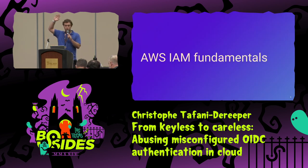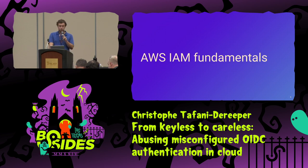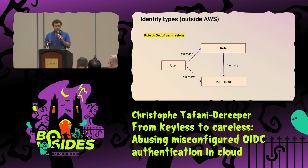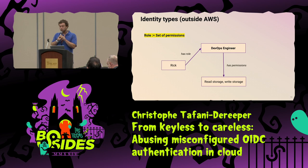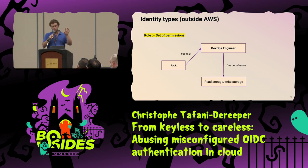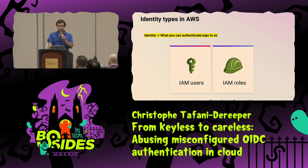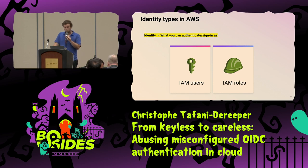So who in the room is familiar with AWS or works with it on a regular basis? A short introduction to a few things we'll need. Forget about the general concept of a role as permissions assignment. In AWS, a role means something totally different. In AWS, there are two types of identity you can use to authenticate: IAM users and IAM roles. IAM users are what you'd expect — a username, a password for the console, and programmatic credentials for the API.